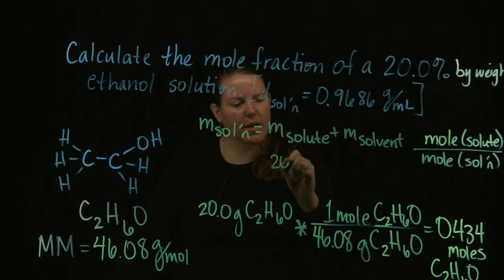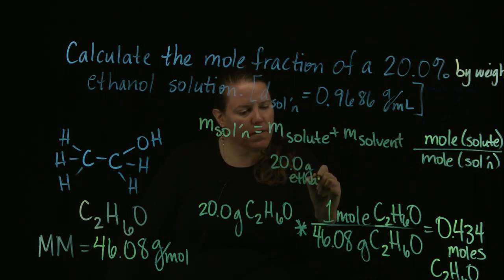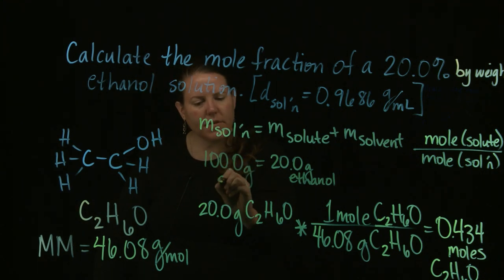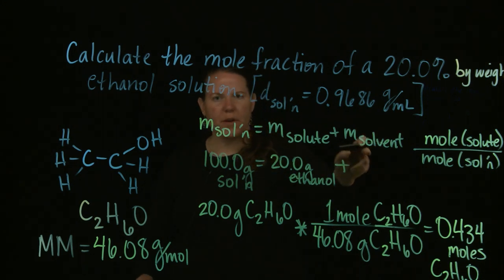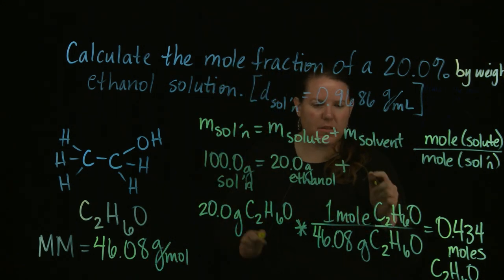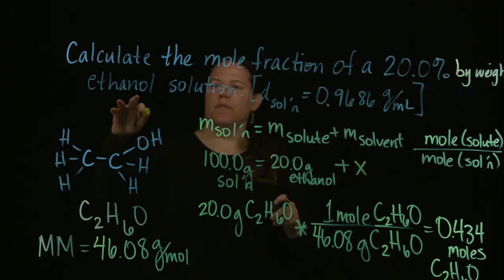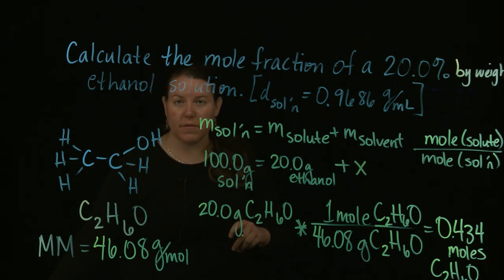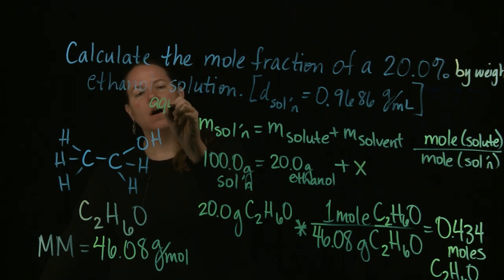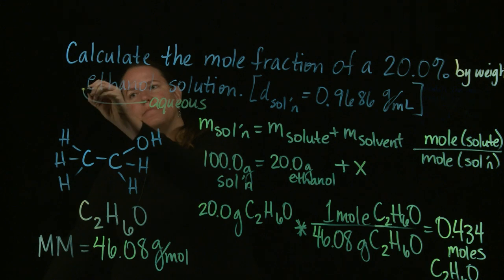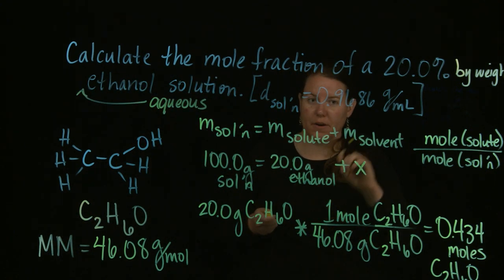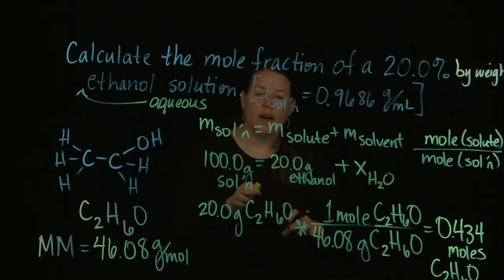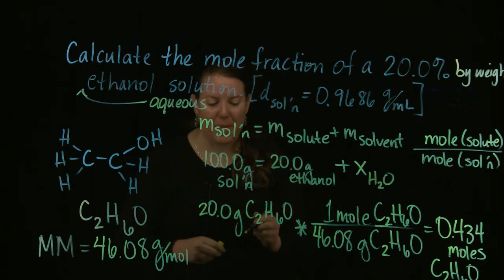So I know that I have 20 grams of ethanol, and I know that I have 100 grams of the solution. The question is, how many grams of the solvent do I have? And what is the solvent here? Well, if you're going to have an ethanol solution, the likelihood here is if you do not list what the solvent is, you assume that it is aqueous. If I say aqueous ethanol solution, suddenly we know what that solvent is. That's water, folks. And I know how to calculate from grams to moles of water. I just need the molar mass of water.